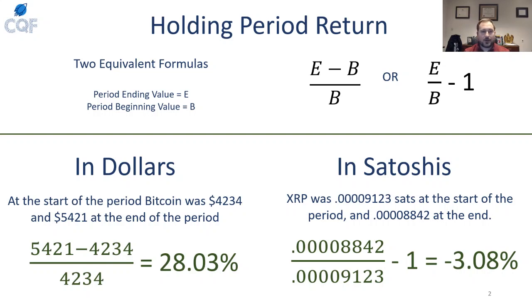There are two variables that are important in these formulas: the ending value and the beginning value. The ending value is $5,421 and the beginning is $4,234. The two formulas are: ending minus beginning divided by beginning, or quite easier, ending divided by beginning minus one. So $5,421 minus $4,234 divided by the beginning value of $4,234 gives a return of 28% — pretty darn good.